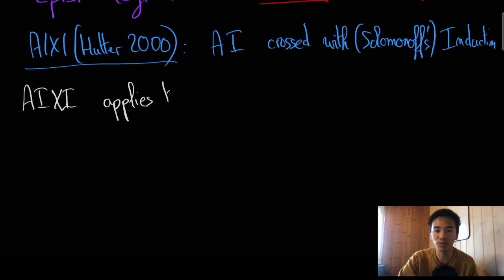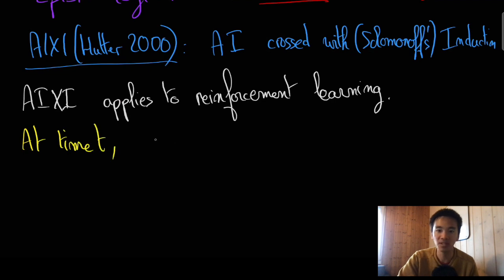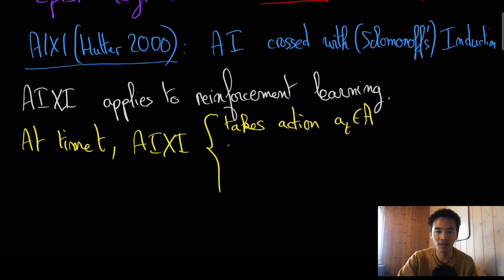The basic framework of AIXI is that of reinforcement learning. In reinforcement learning, at each point in time, the algorithm, here AIXI, must take an action AT from a finite set A of possible actions. Then AIXI makes an observation OT from a finite set O of possible observations and receives a reward RT, say between -1 and 1.